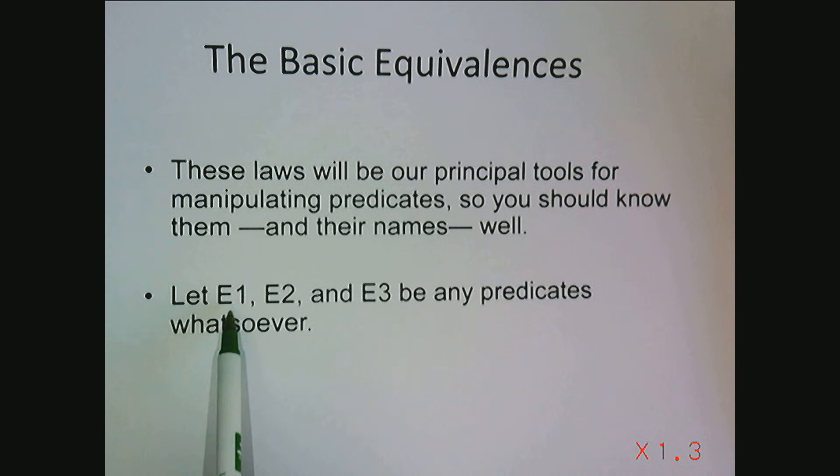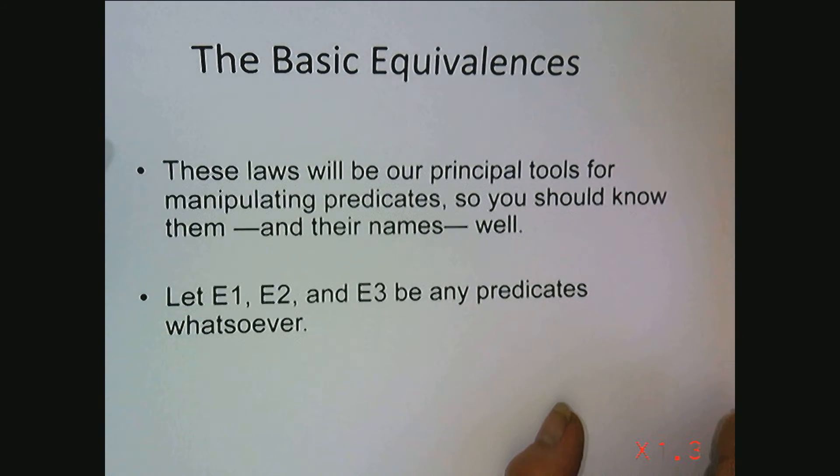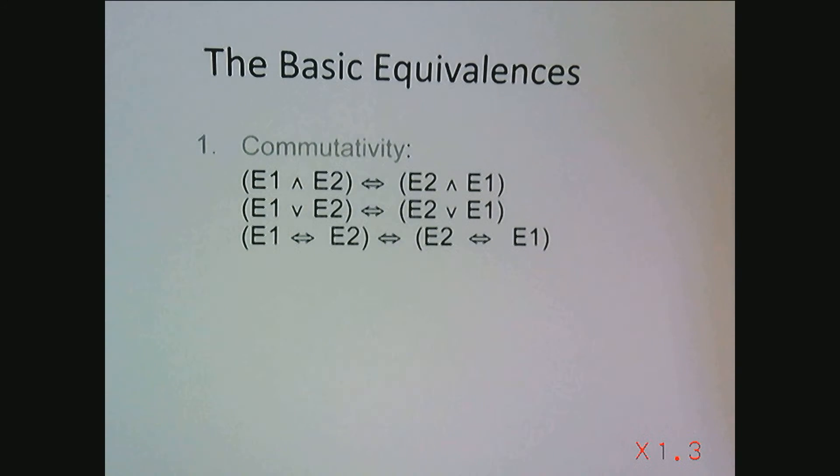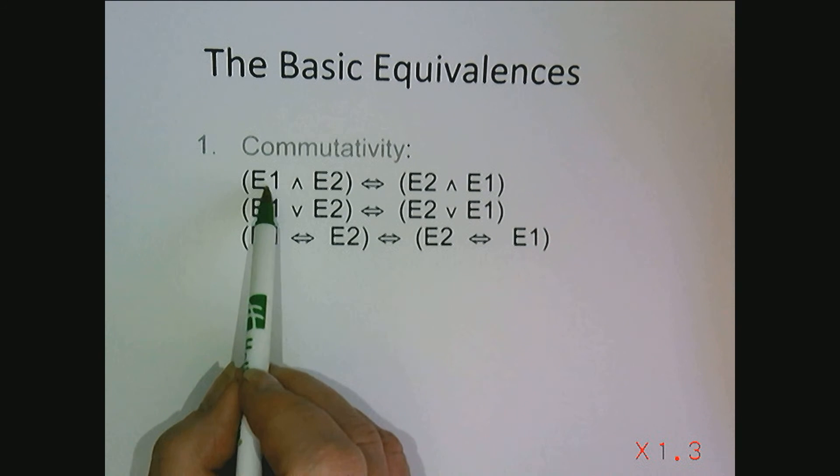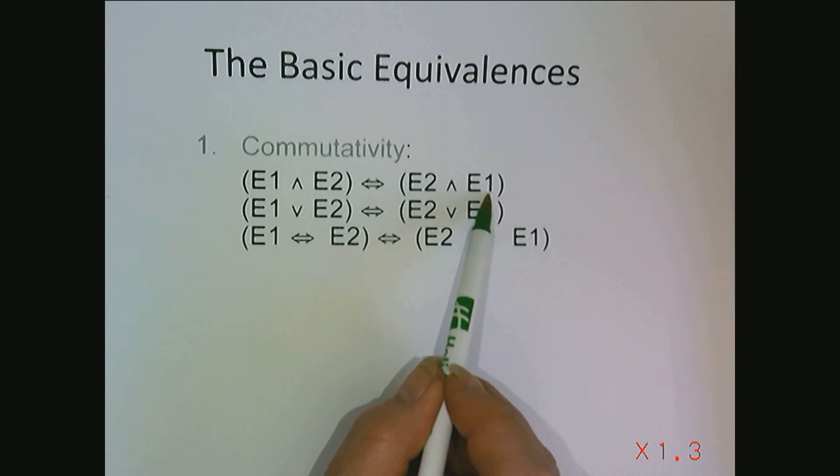So let's let E1, E2 and E3 be any predicates. As far as the basic equivalence goes, one of the first ones I want to look at is commutativity. We say E1 and E2 is equivalent to E2 and E1.